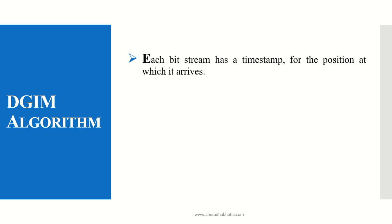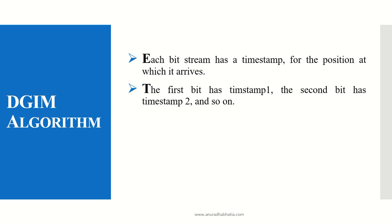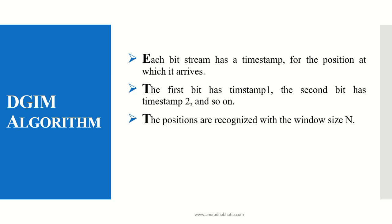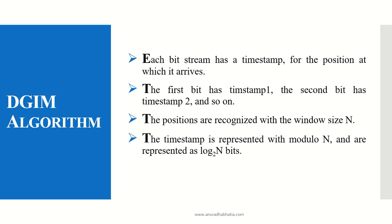In the DIGIM algorithm, each bit that comes in has a timestamp indicating the position at which it arrives. The first bit has a timestamp of 1, the second has a timestamp of 2, and so on. Positions are recognized within the window size n, which is usually taken as a multiple of 2. The timestamp is represented with modulo n and stored using log base 2 of n bits.